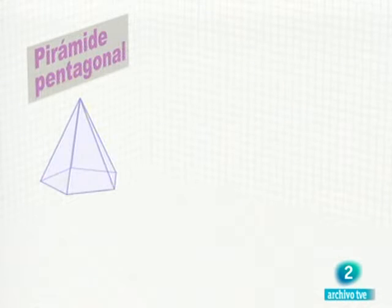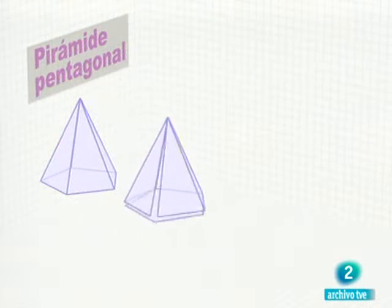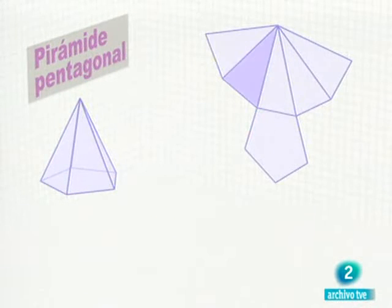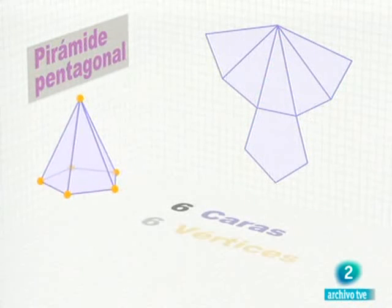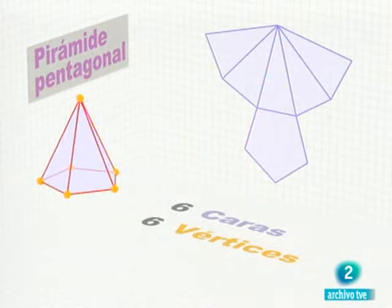Veamos qué ocurre con esta pirámide. Caras, cinco laterales y una base, seis en total. Vértices, cinco abajo y uno arriba, otros seis. Aristas, cinco laterales y cinco en la base, diez en total.